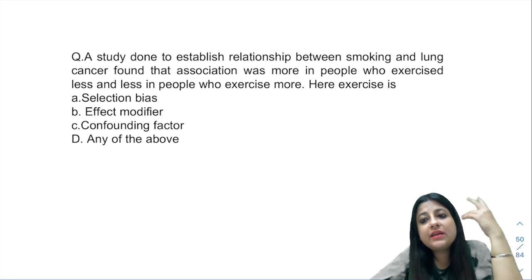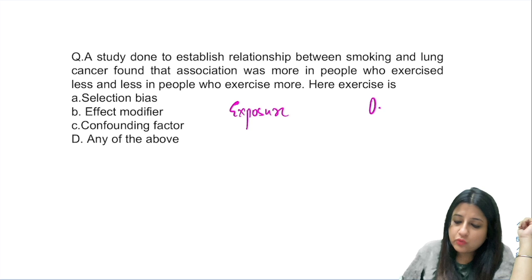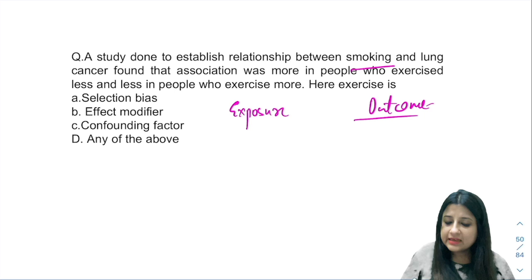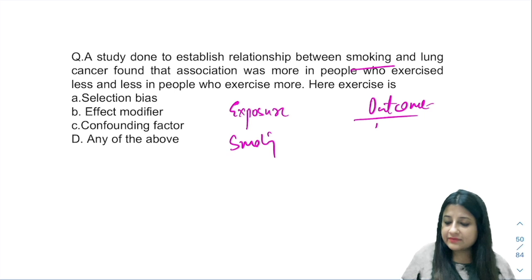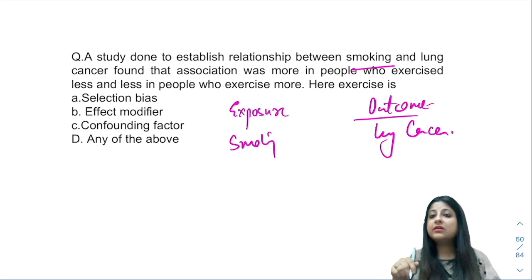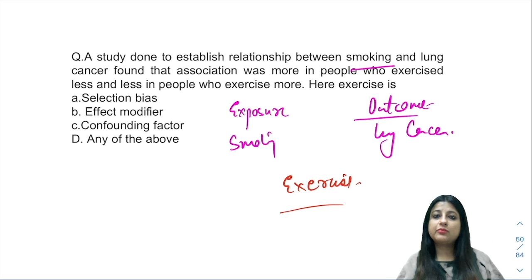Whenever you get a question like this where you have three variables, the first thing you need to figure out is what is the exposure and what is the outcome. Here we are studying smoking and lung cancer — that's clearly stated. The third variable we are talking about is exercise. Now is it a confounder or an effect modifier?